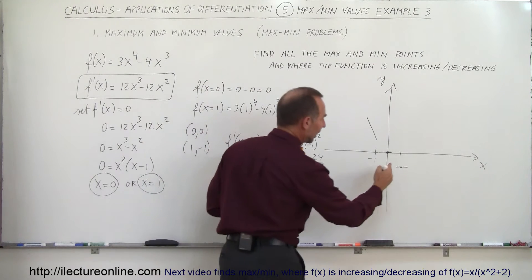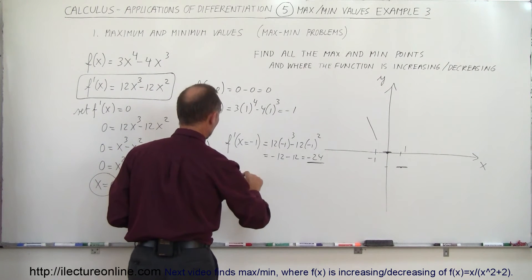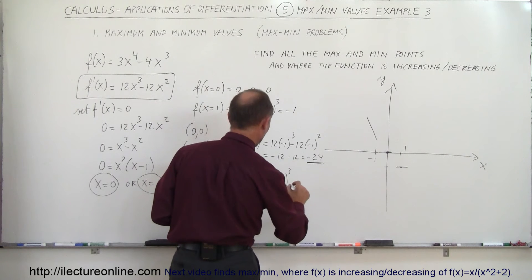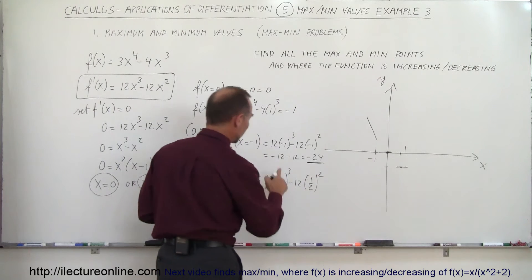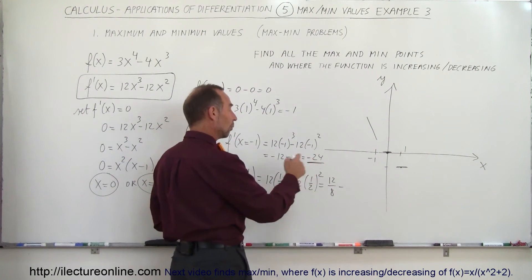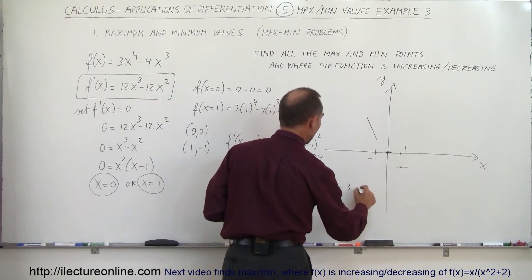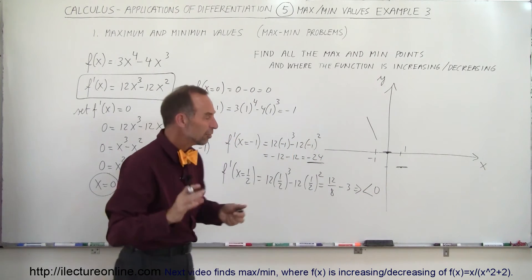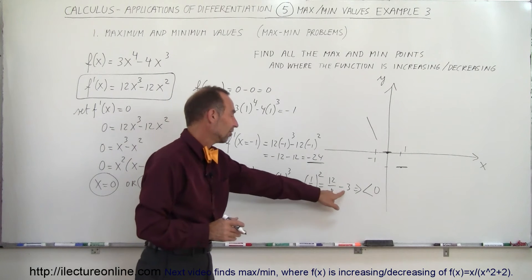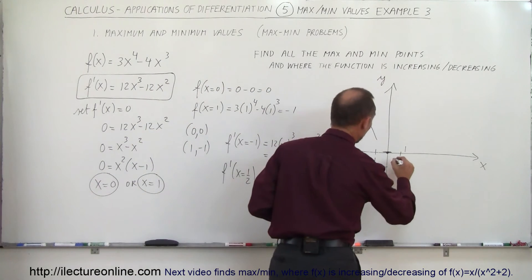What happens in between the two points? Let's try x equals one-half, between 0 and 1. f prime of (1/2) equals 12 times (1/2) cubed minus 12 times (1/2) squared. One-half cubed is 1/8, times 12 is 12/8; one-half squared is 1/4, times 12 is 3. So we get 12/8 minus 3, which is a negative number — less than zero. A negative slope means the function is decreasing in between those two points as well.